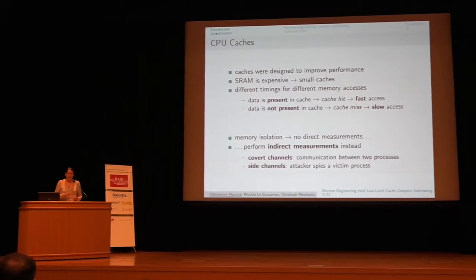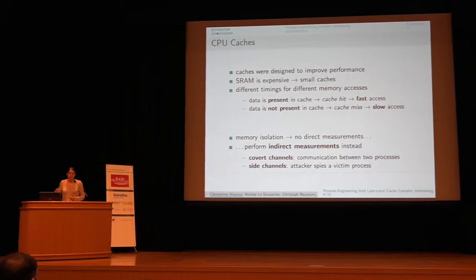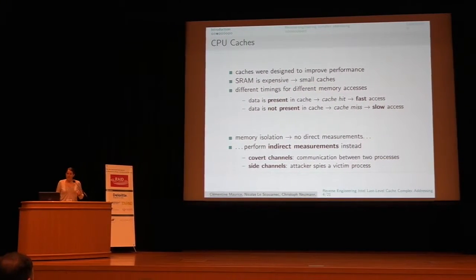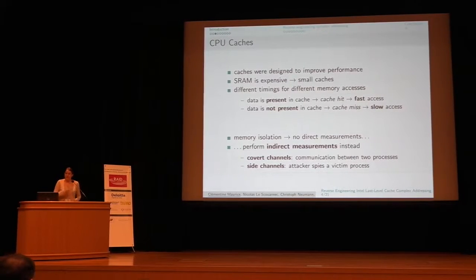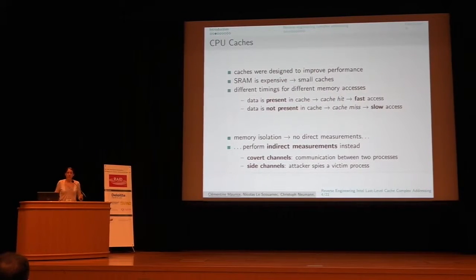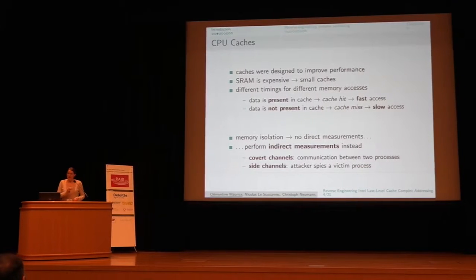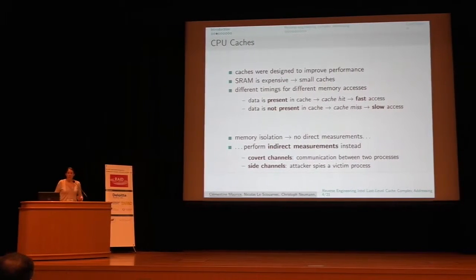Fortunately, we have memory isolation, which means one process cannot just look into what's in the cache for another process. But due to these fast and slow accesses, we can perform timing measurements. We have two types of attacks: covert channels, which is communication between two processes that should not communicate but cooperate to do so; and side channels, where an attacker spies on a victim process without any cooperation.